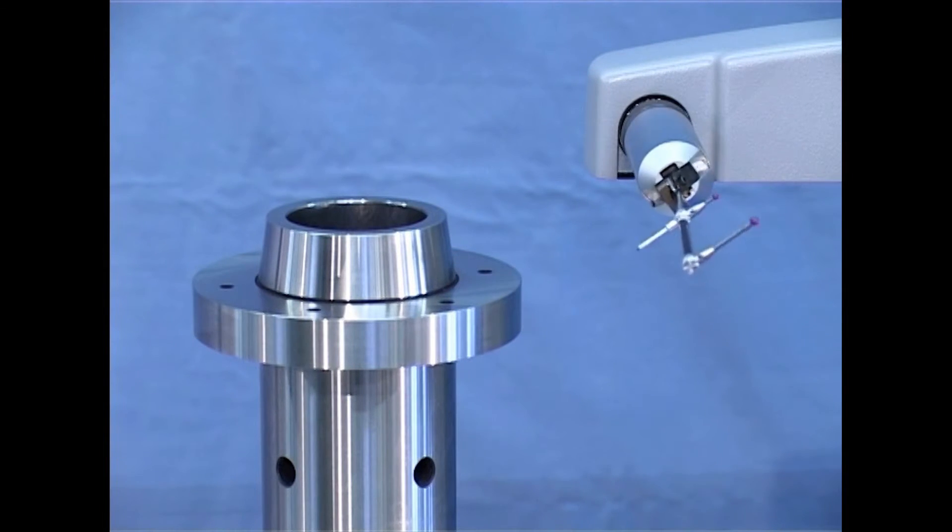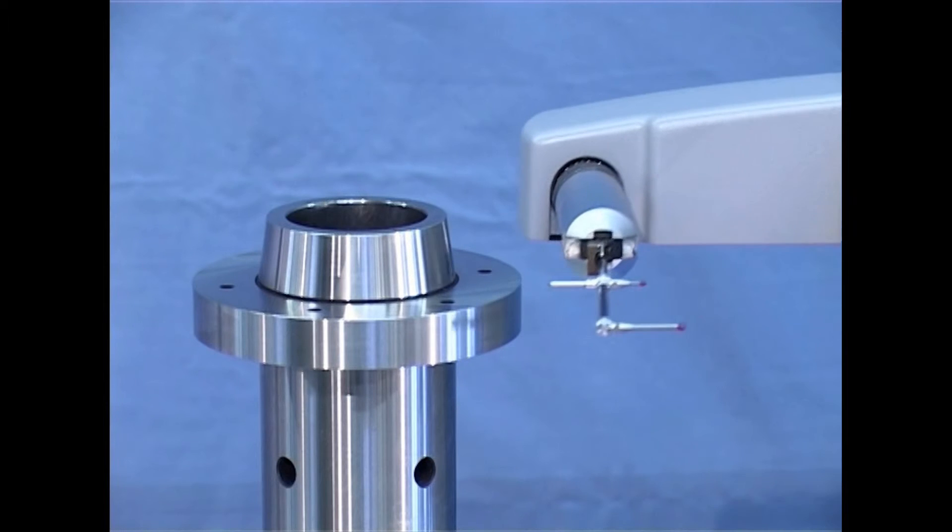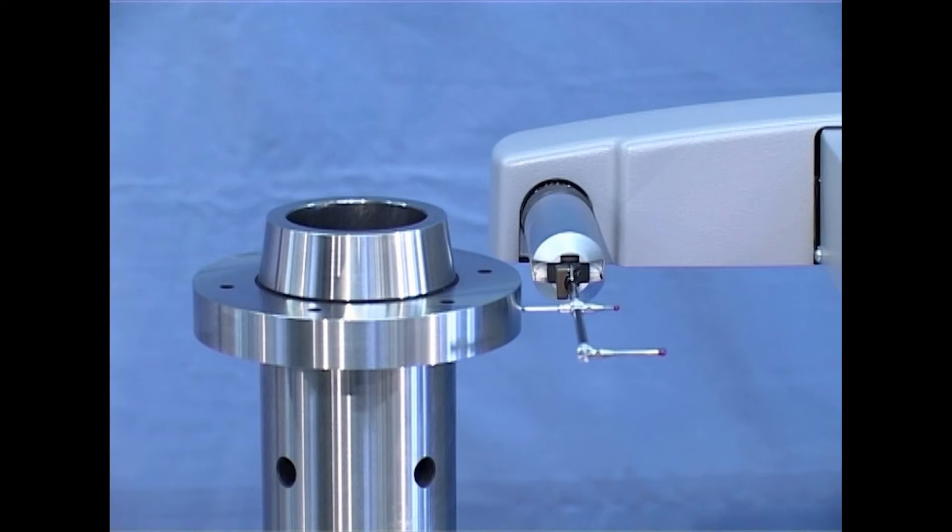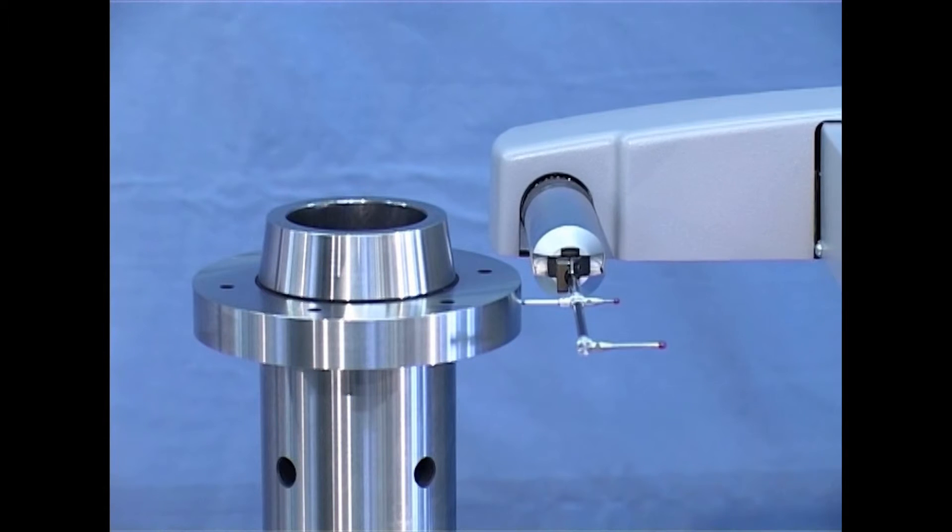A specially developed scanning system allows combined automatic measurement of form and roughness characteristics in one measuring round. The measuring instruments of the HOMO RoundScan series are therefore an investment in precision and economy.